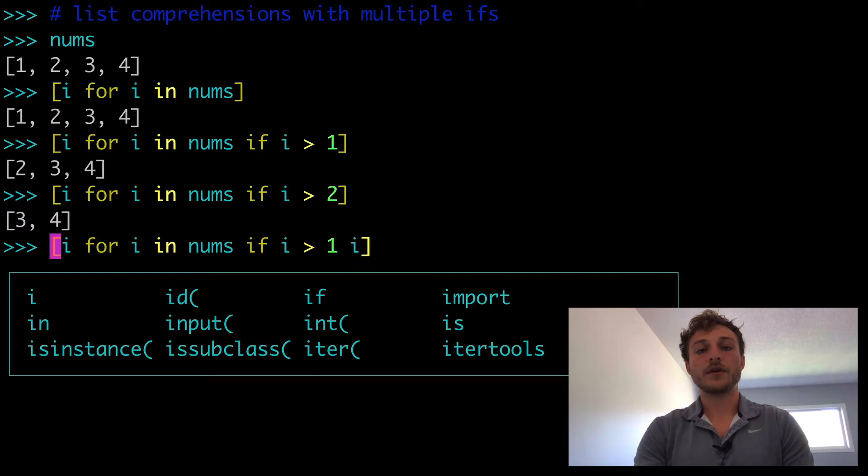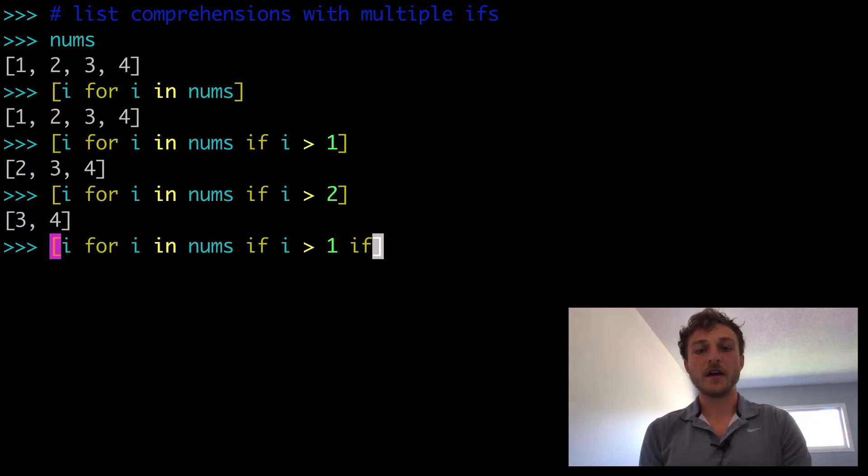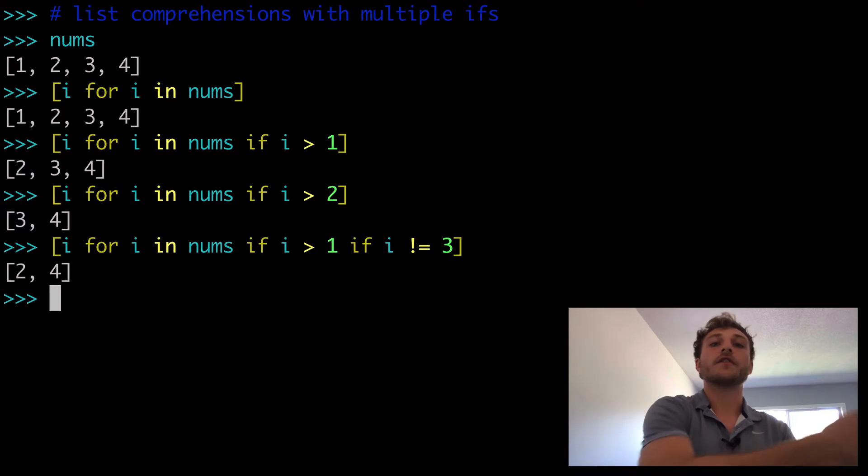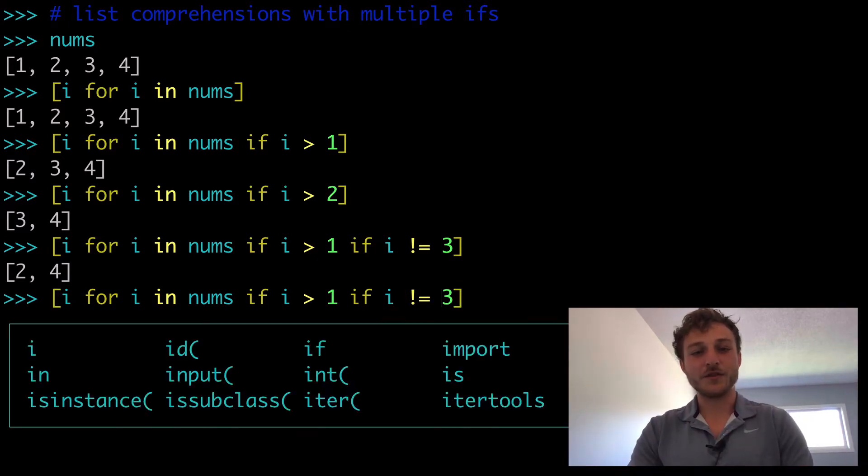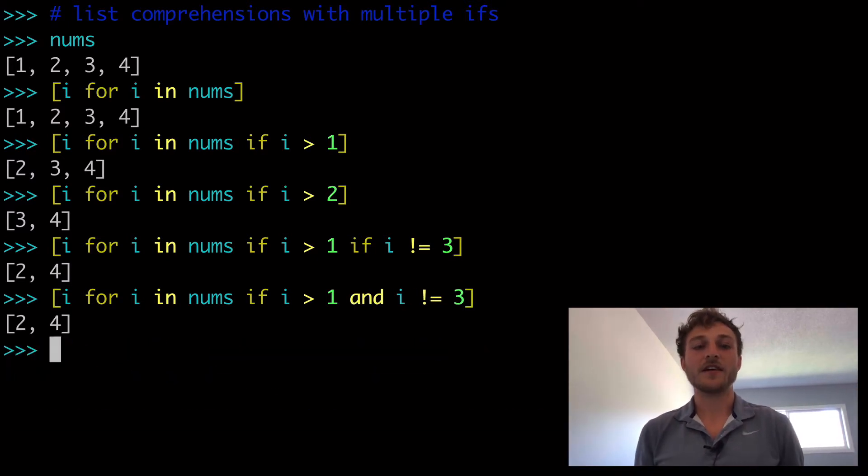But did you know that you could have multiple if statements here? So we could do another one and say if i does not equal 3. So we have two if statements, and we're getting everything greater than 1 and everything that's not equal to 3. And you might be thinking, okay, but why is there two ifs, couldn't you just do and here? And you could, but they're slightly different. So that's some of the themes we're going to explore in this video today.